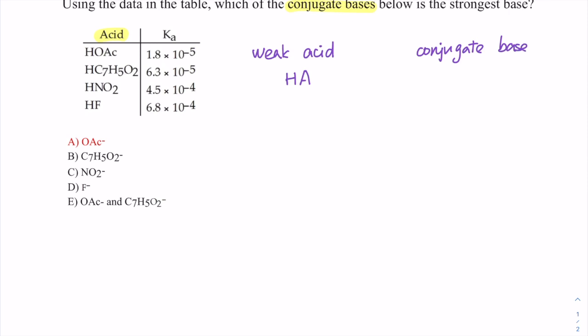Let's use a generic weak acid HA. The conjugate base - what's the acid definition? Donating a proton. So after donating the proton, we end up with the conjugate base, this anion A-. Together they're a conjugate acid-base pair.